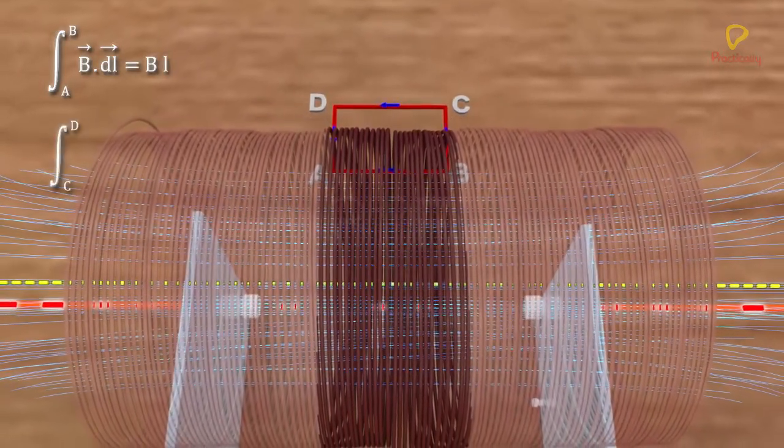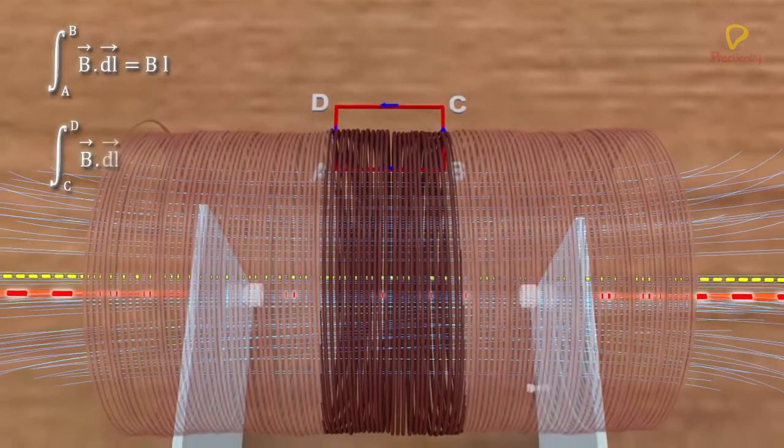CD is outside the solenoid. Hence, B dot dL is 0.